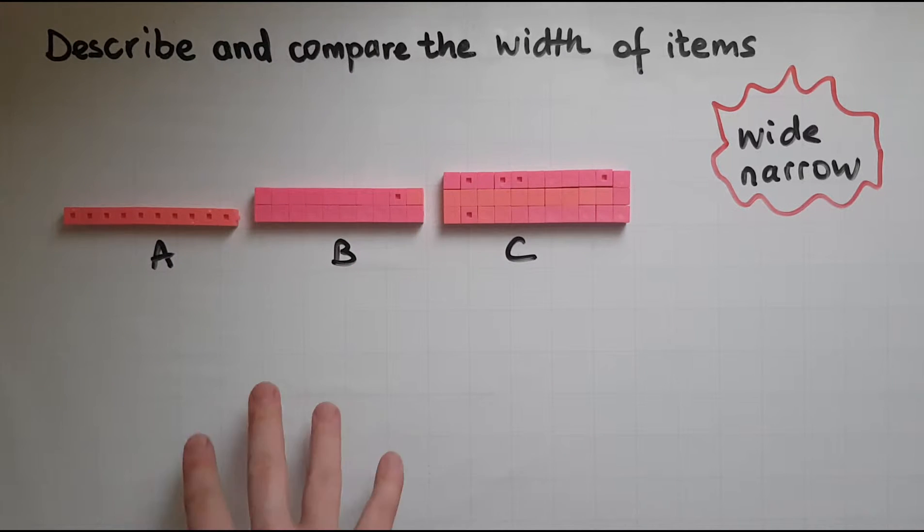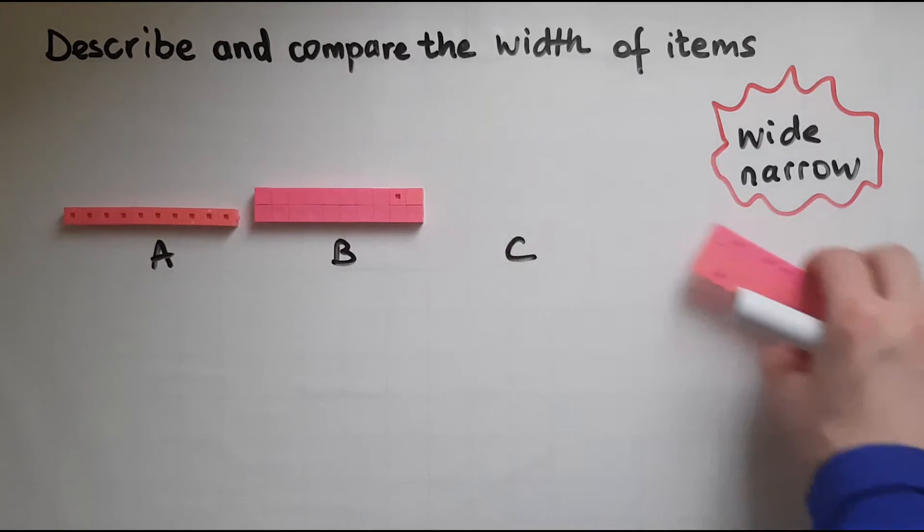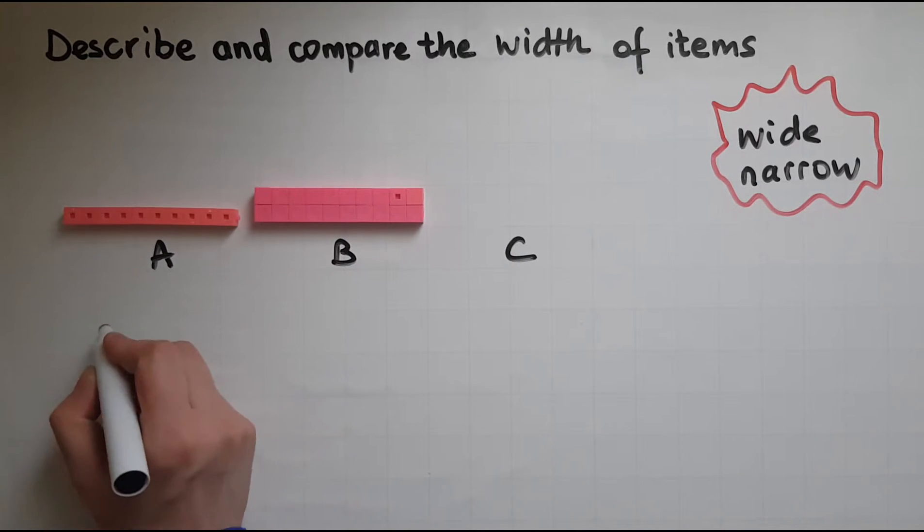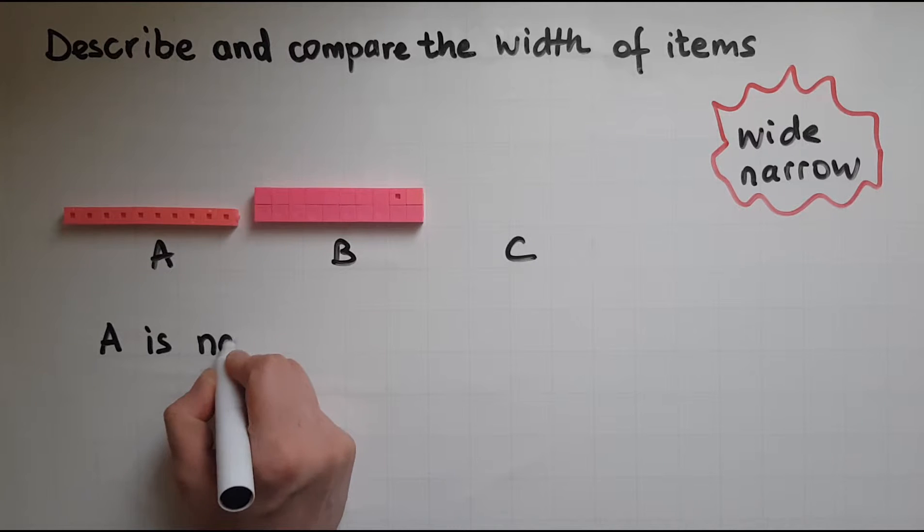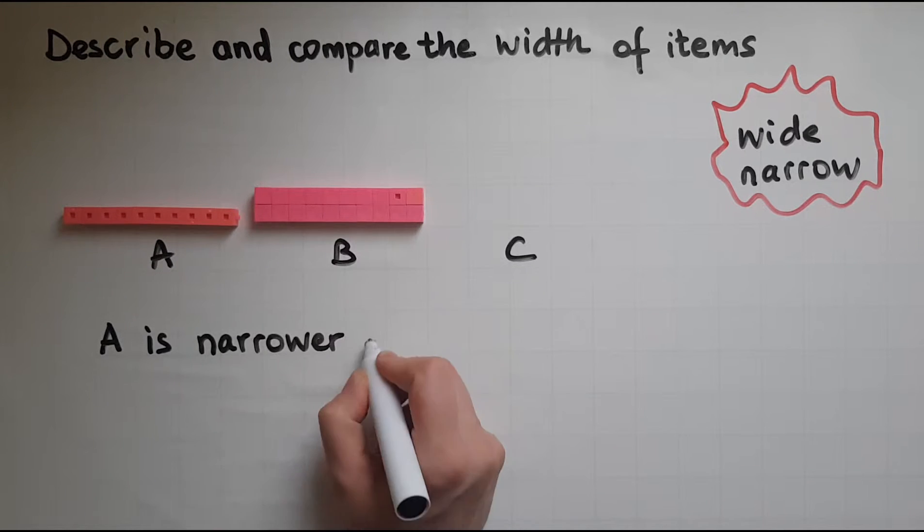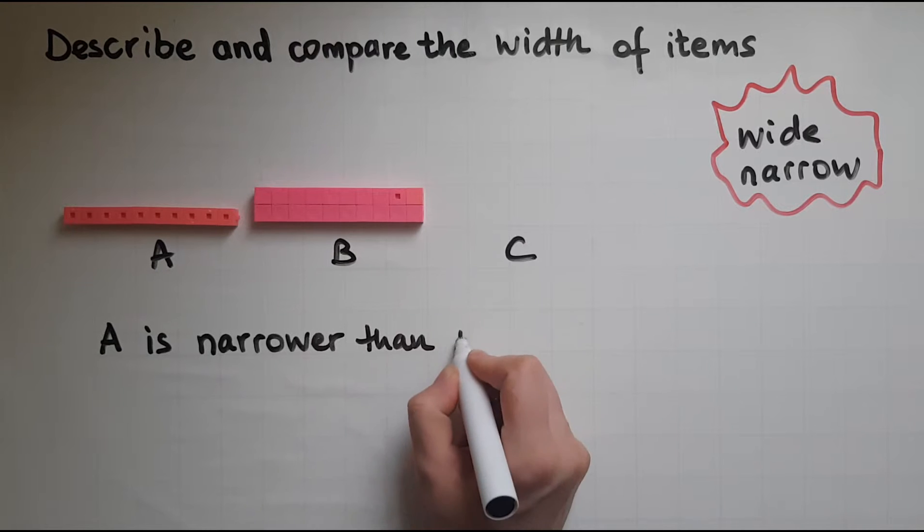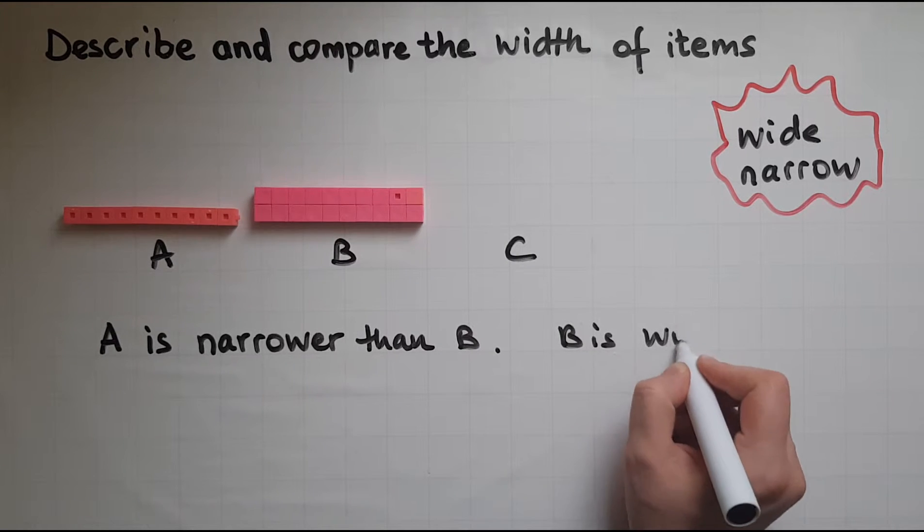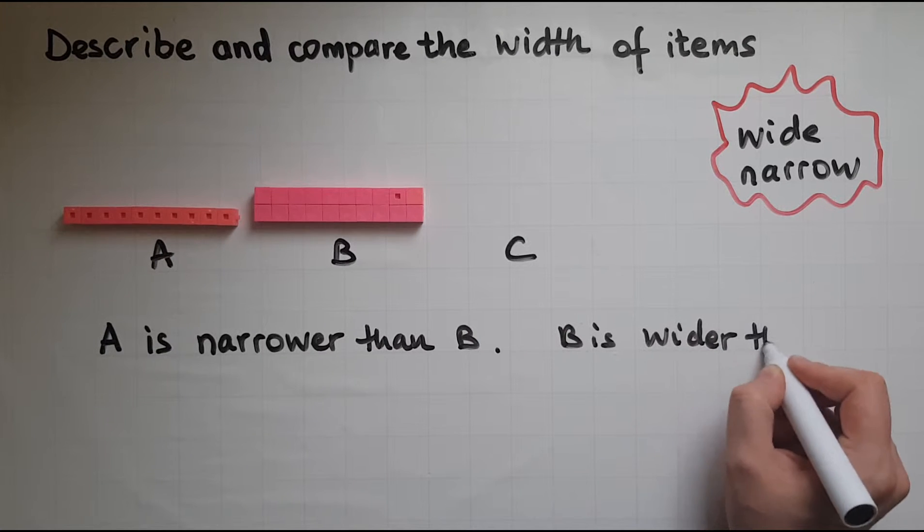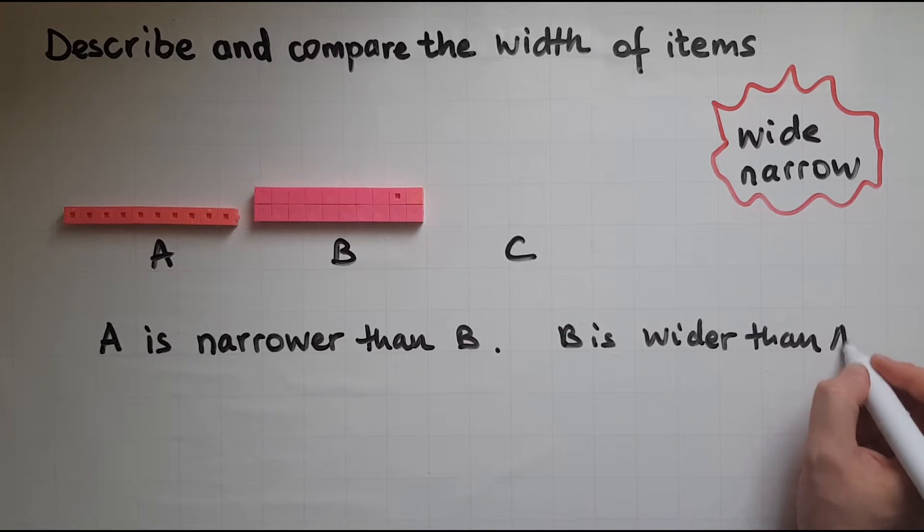So if I compare A with B first, I can see that A is narrower than B. So B is wider than A.